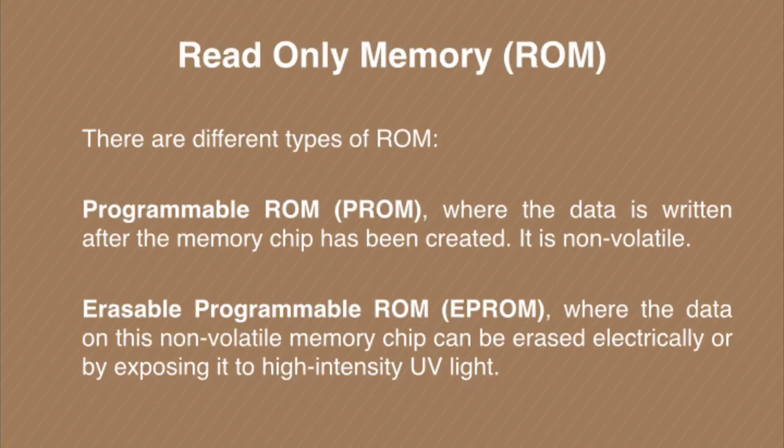The next type is Erasable Programmable ROM, where the data on this memory chip can be erased electrically or by exposing it to high-density ultraviolet light. This is also a non-volatile type, but it can be erased and we can program it again — we can write the data into this type of ROM once more.